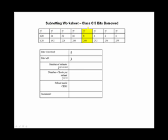If I borrowed 5 bits, I have 3 left because I have 8 bits to play with in a Class C license, and 8 minus 5 is 3. My number of subnets is 2 to the bits borrowed, or 2 to the 5th, which is 32. My number of hosts per subnet is 2 to the bits left. I have 3 bits left. 2 to the 3rd is 8.